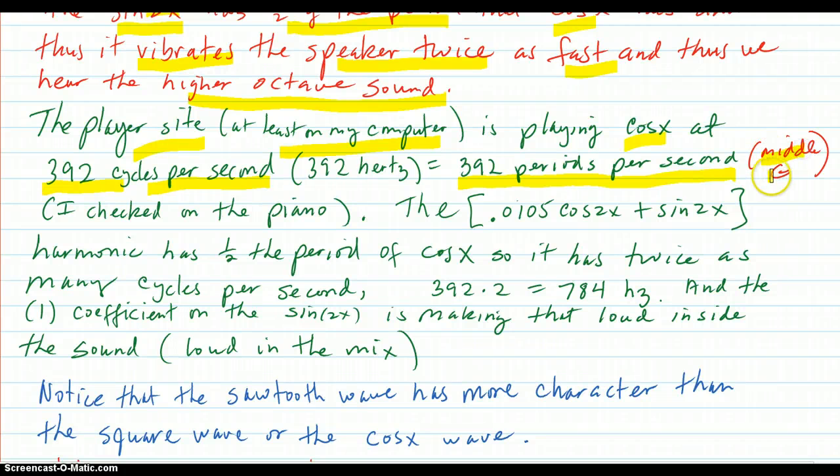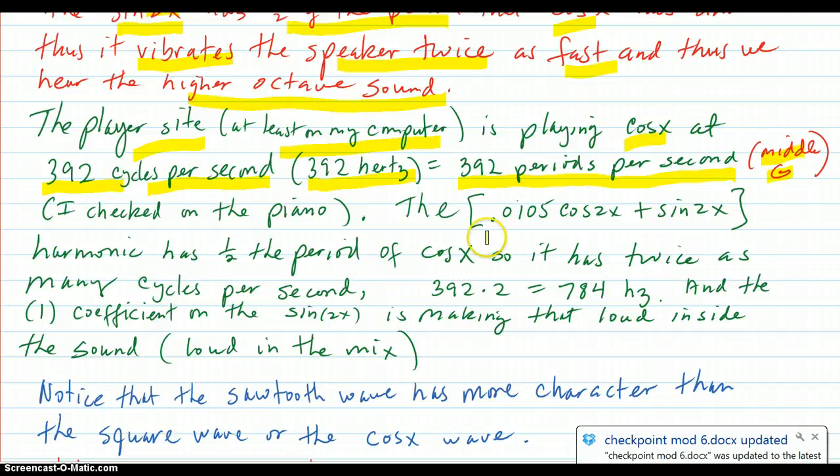Well, that happens to be about middle G on the piano. So that's 392 hertz. That's what cycle per second means. And so this harmonic, which is what these are actually called.